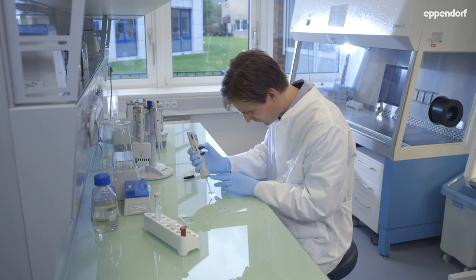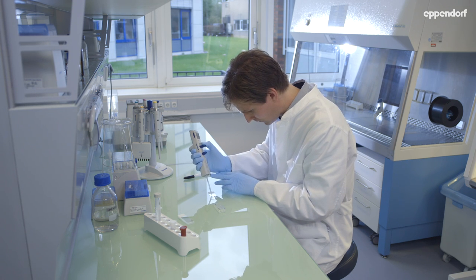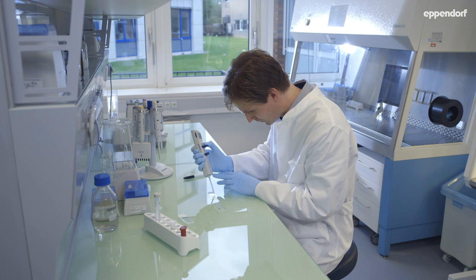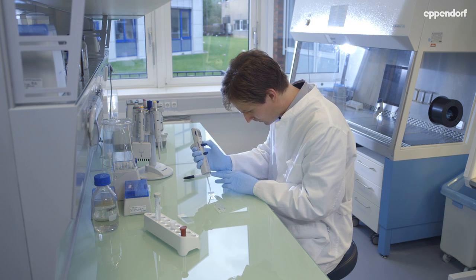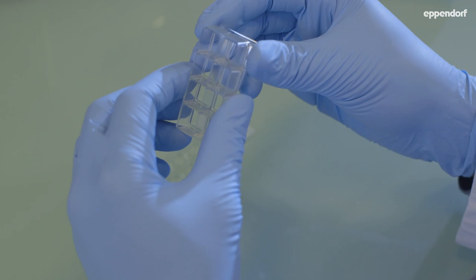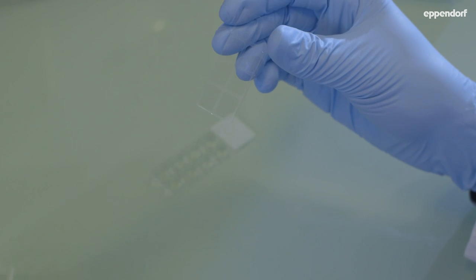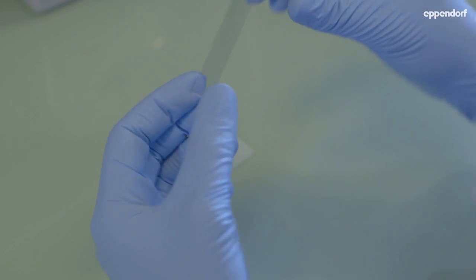Cells grown on the Eppendorf cell imaging cover glass can be mounted by using a standard microscope slide. Carefully remove the chamber from the thin cover glass and place it on the microscope slide.